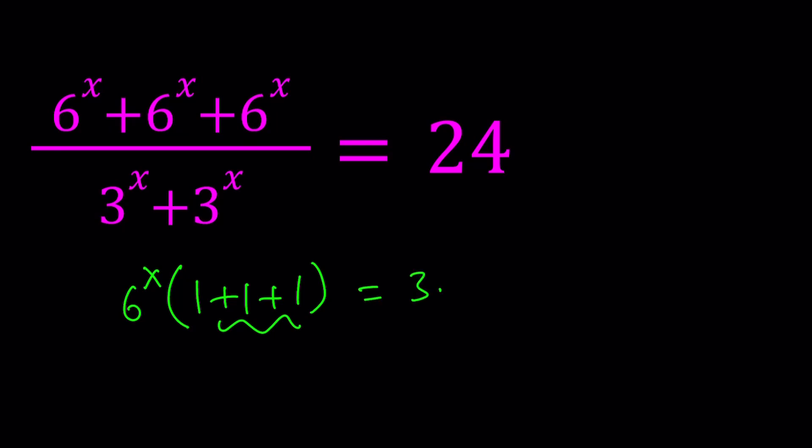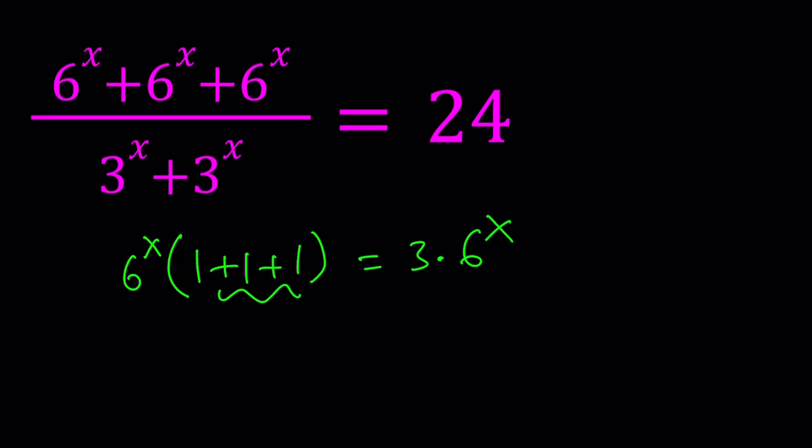This gives us 3 · 6^x. It's a well-known property, very obvious, but we take things for granted and sometimes it's important to know how these properties work. Let's go ahead and simplify this, because as is, this equation is kind of hard to solve with all these exponentials. I can cross multiply, but I don't think that's very helpful. If you know another way to do it, let me know in the comments.